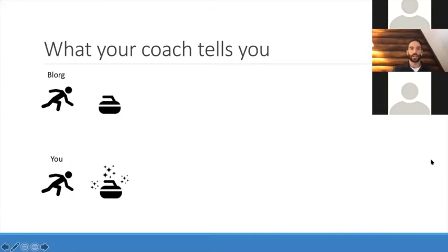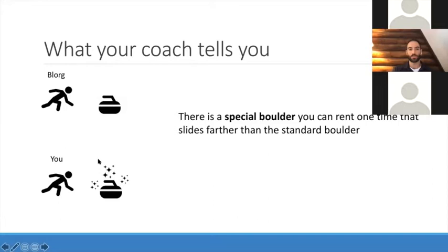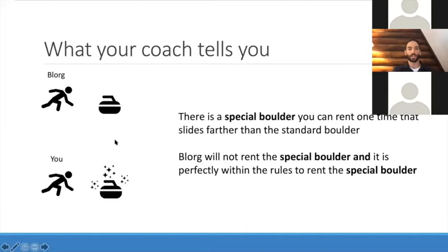Since this is a high-stakes situation, you have a coach. Your coach tells you that you are allowed to rent a special boulder — a special piece of equipment that slides farther than the standard boulder on average. It's not guaranteed; it may slide farther or less far, but on average it slides farther. Blorg will use the standard boulder, and it's perfectly within the rules to rent the special boulder — it's not like doping.